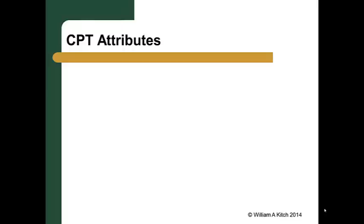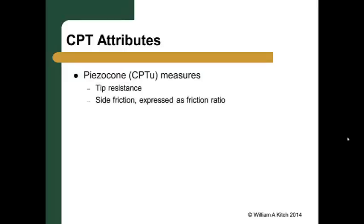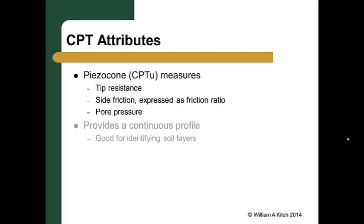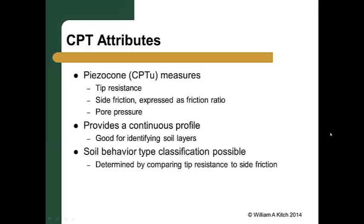In this presentation, I've tried to provide an overview of cone penetrometer testing. We've seen how the cone penetrometer measurements are made, and I've described the process of classifying soil by behavior type using CPT data. The most common CPT probe in use is the piezo cone. This probe measures tip resistance, side friction — normally expressed as a friction ratio — and the pore pressure generated during testing. The CPT provides a continuous profile of the soil, making it very good at identifying different soil layers. We can use this profile to classify soil based on behavior by comparing the relative magnitudes of tip resistance and side friction.